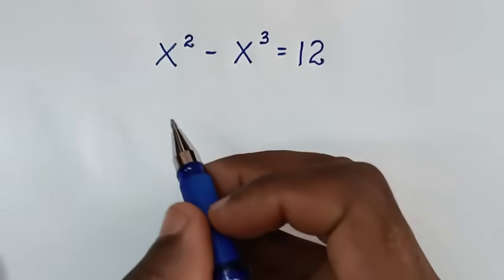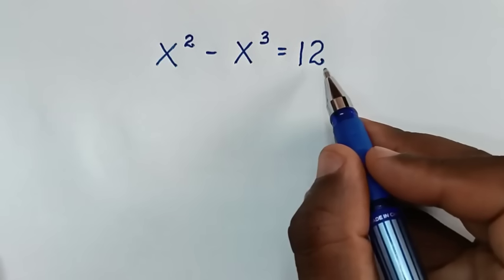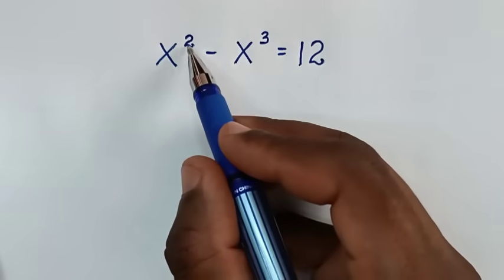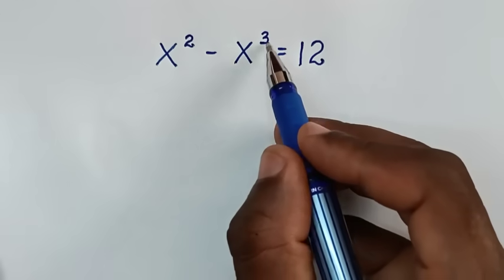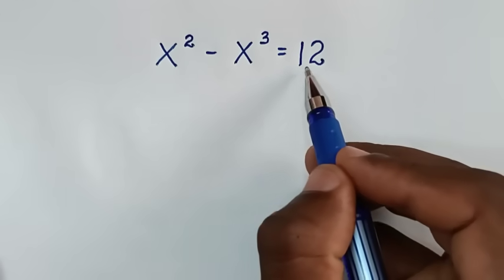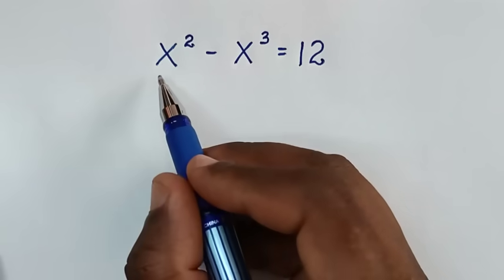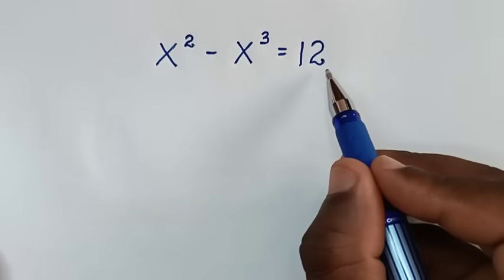Hello, you are welcome to solve this math problem which is x squared minus x to the power 3 is equal to 12. We need to find the values of x from this equation.